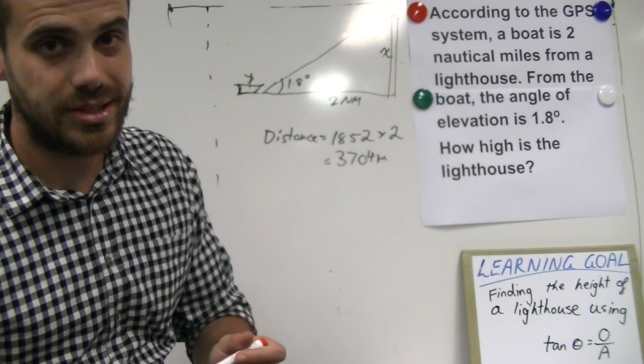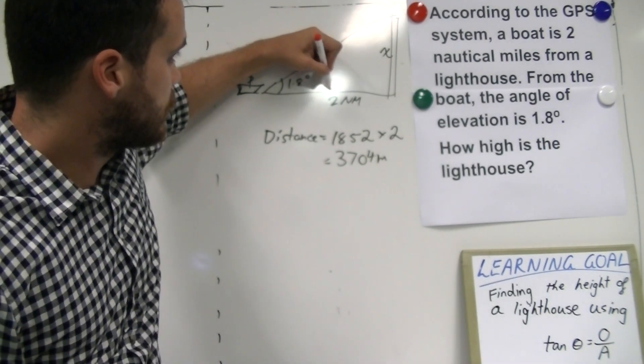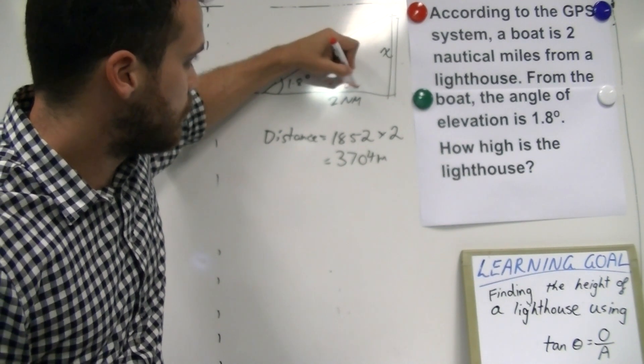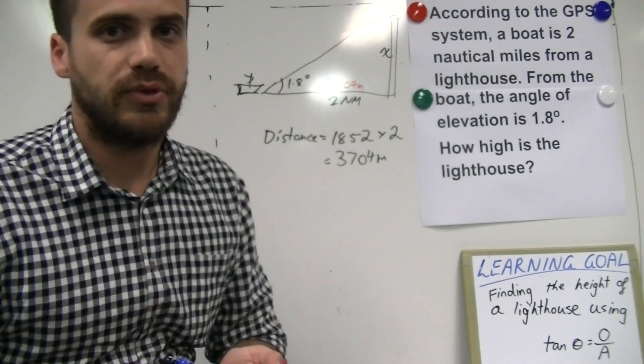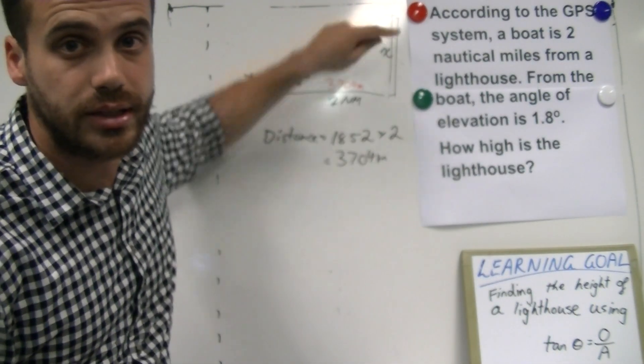So, that means that the distance from the boat to the lighthouse is 3,704 metres. Once we've got that information, we can start using our tan ratio to figure out how high that lighthouse is.